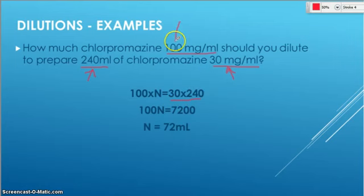The beginning, 100, goes on the left side. So there's my 100. And I do times N because I don't know what that missing piece is. You can call it whatever letter you want, but I just prefer N. So 100 times N is going to equal 30 times 240.